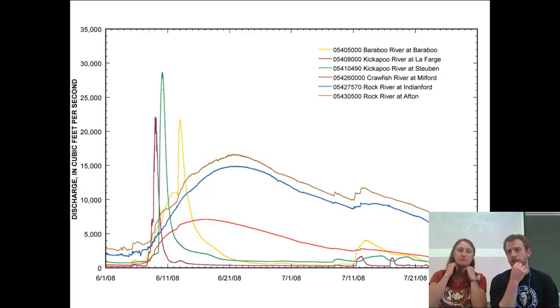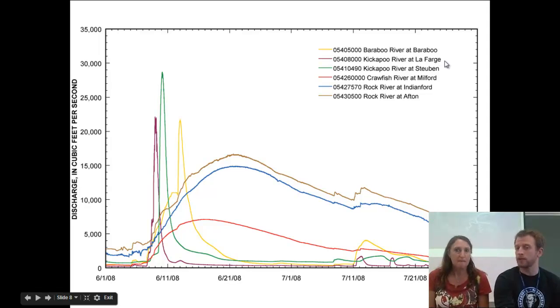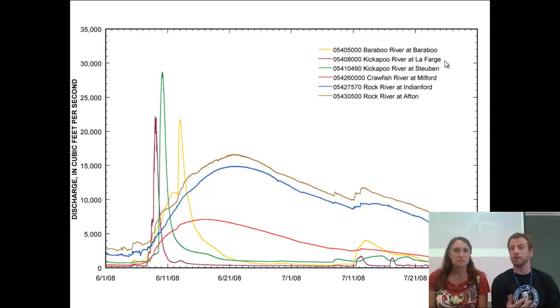Oh, and just six different locations, too, because if you see the purple, like the Kickapoo River at Lafarge, so that's the station or the location where they took the data. But then Kickapoo River at Steuben was the same river, but just different location. And so I'm seeing kind of two big groups, maybe a third one in there. Why would the Kickapoo River have different shapes than, say, the Crawford and the Rock River?